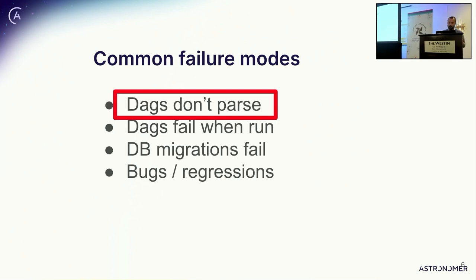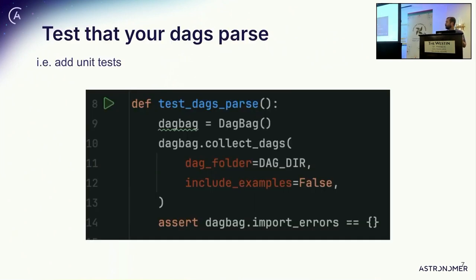The first failure mode is DAGs don't parse — thankfully the easiest one to deal with. You can actually just write a test to verify that your DAGs parse. You could incorporate this into your project. It doesn't necessarily have to be automated through CI. This is an intro-track talk, so maybe people don't have the most sophisticated setups. You can just do it as part of your pre-upgrade routine — check that your DAGs parse after upgrading locally. There's not really a good reason to be caught by this after an upgrade.